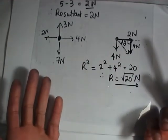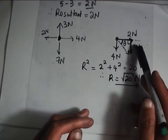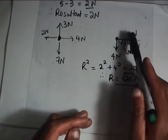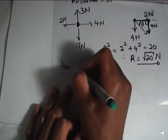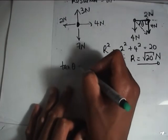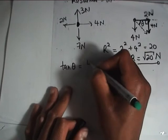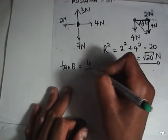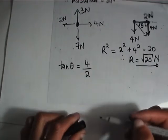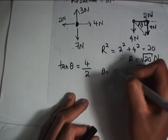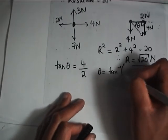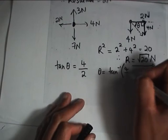So let's calculate that angle theta. We can use tan, because we have 4 newtons and 2 newtons. Tan theta is equal to opposite 4 over adjacent, which is 2. Then you can get your theta.